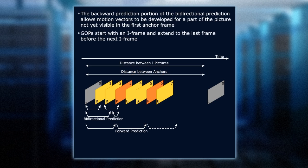When we compare forward and bi-directional prediction, the backward prediction portion of that bi-directional prediction allows motion vectors to be developed for a part of the picture that aren't yet visible — so we're kind of preparing. It's an anchor frame. The Group of Pictures starts with the I-frame, obviously, and extends to the last frame before the next I-frame comes out.